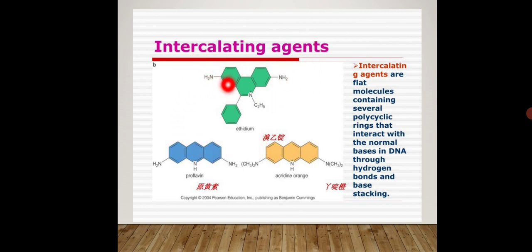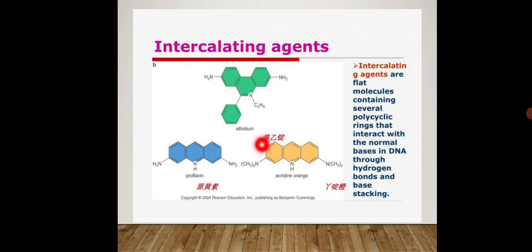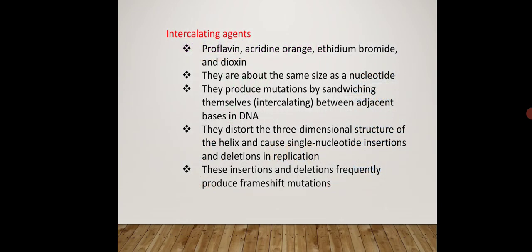Intercalating agents act as mutagens by inserting themselves between the normal bases in DNA, disrupting the replication, transcription, and translation processes. Examples of these agents are proflavin, acridine orange, ethidium bromide, and dioxin.